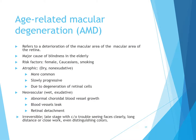Age-related macular degeneration (AMD) refers to deterioration in the macular area of the retina. It is a major cause of blindness in the elderly, with risk factors being female, Caucasian, and smoking. There are two types: atrophic (dry or non-exudative), which is more common and slowly progressive due to degeneration of retinal cells; and neovascular (wet or exudative), characterized by abnormal choroidal blood vessel growth. In wet AMD, these blood vessels leak and can eventually cause retinal detachment. When those blood vessels leak, vision becomes very dark and black.